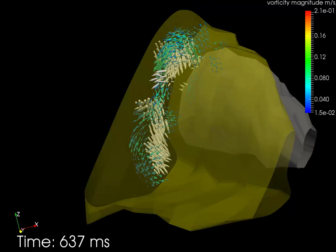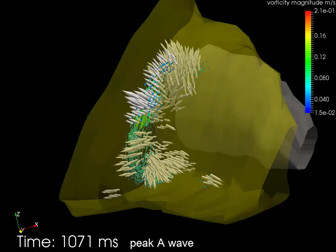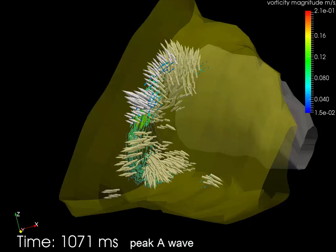Moving forward in time again to the last portion of diastole, the A wave. Here we can see flow around the leaflets, around all the leaflets, and very little flow in the actual core of the tricuspid jet.